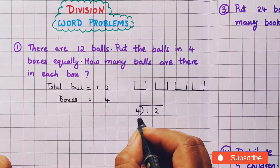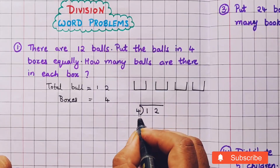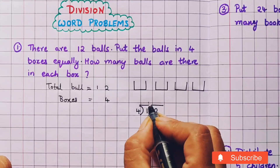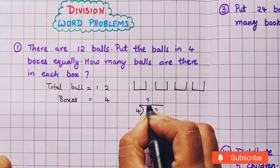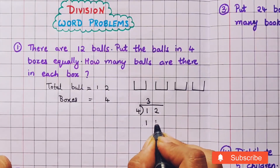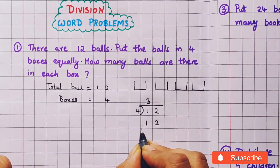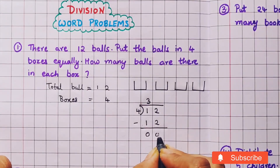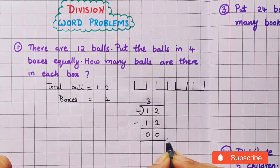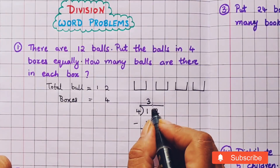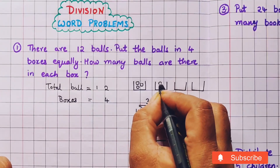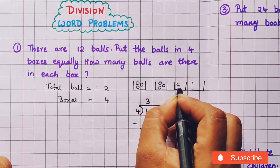So, 12 divided by 4. Let's say the table of 4: 4 ones are 4, 4 twos are 8, and 4 threes are 12. So 4 threes are 12. Now let's do the subtraction and we get 0 as the remainder. The answer is 3. In each box we are going to place 3 balls.